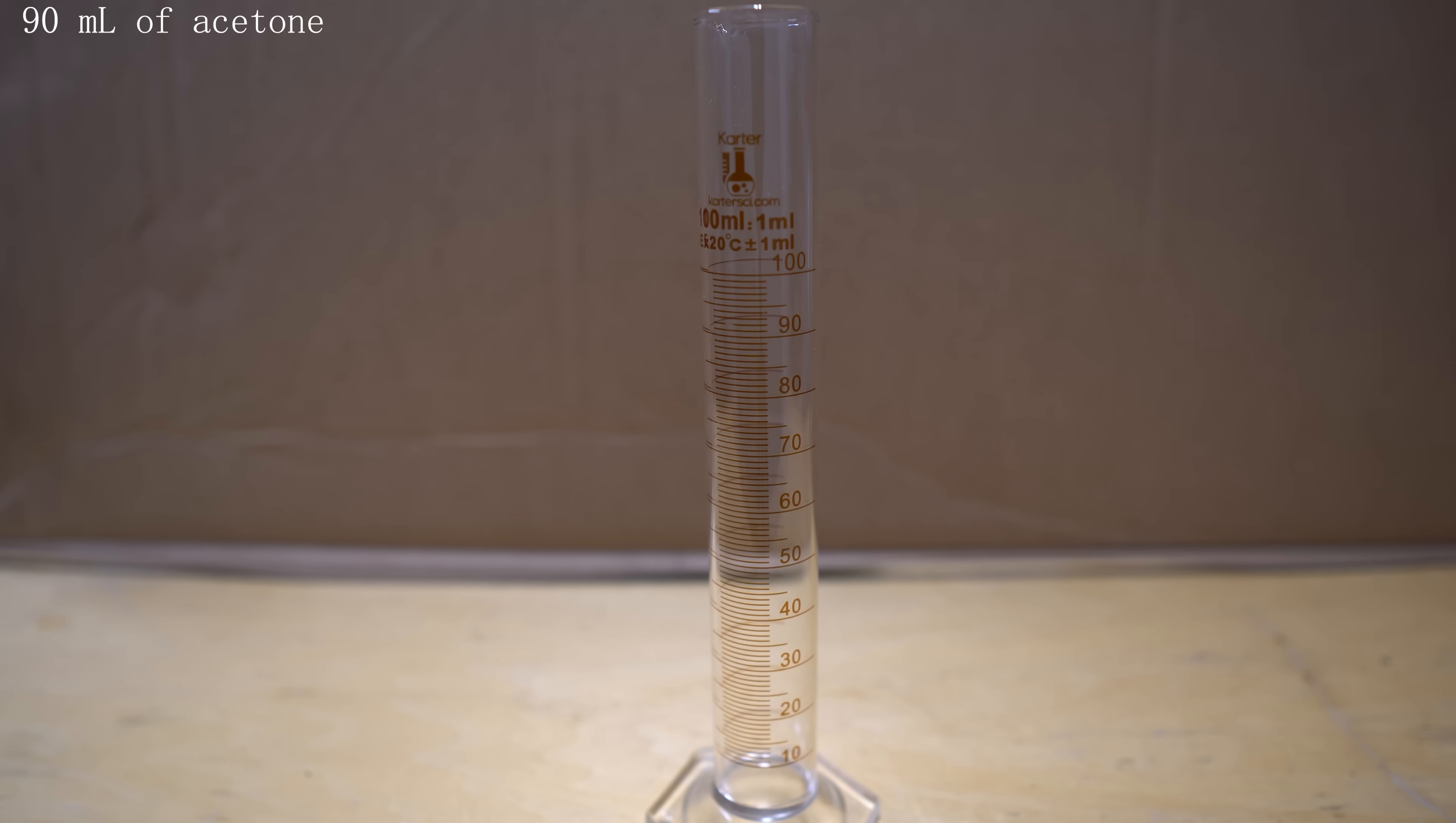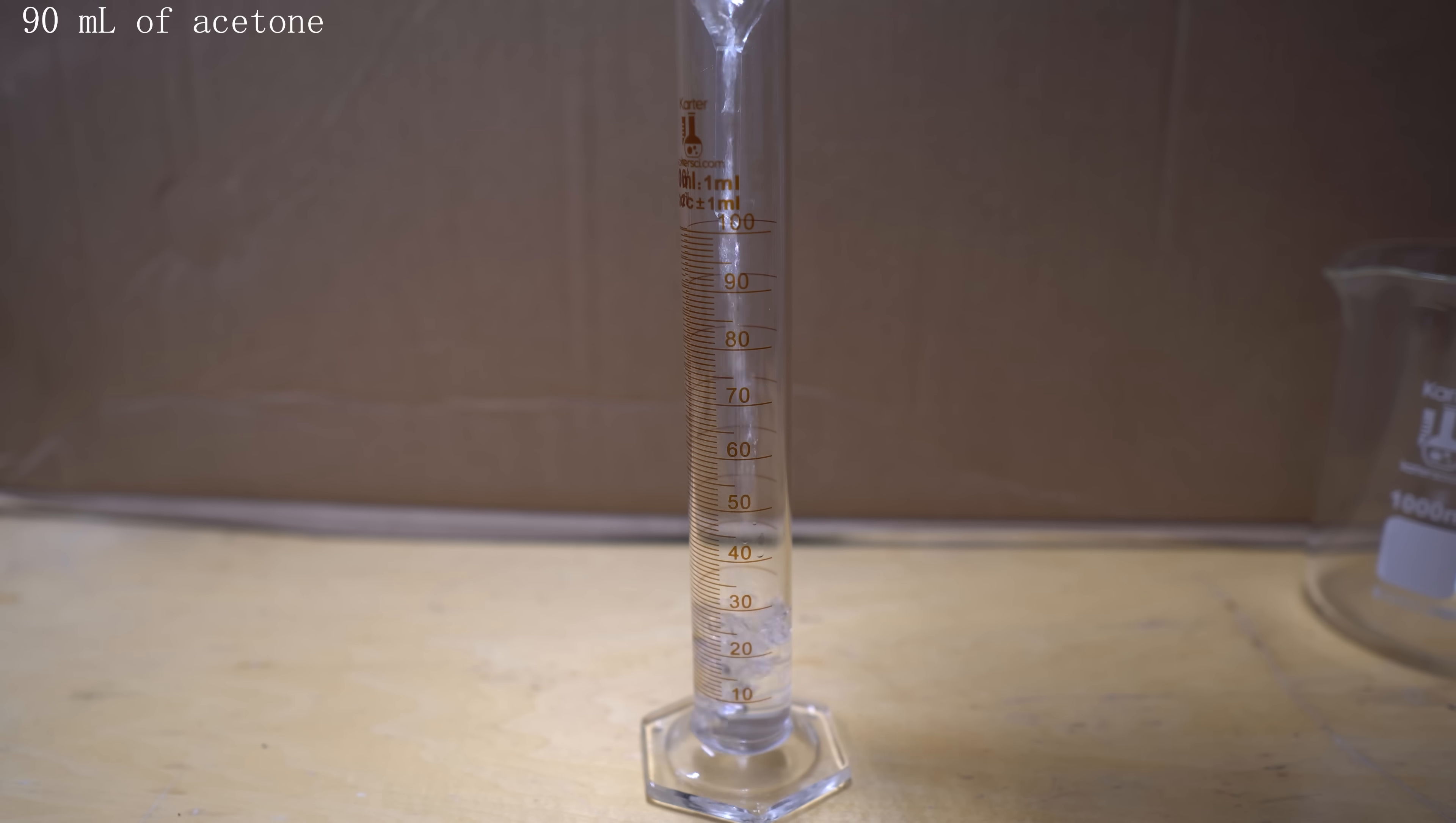You're going to want an excess of the sodium hypochlorite, so I'm using about 90ml of acetone for the 3.57L of bleach. A lot of people will make calculations on how much to use. I'm not Nile Red, so I'm not going to do that.